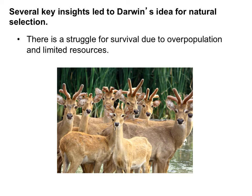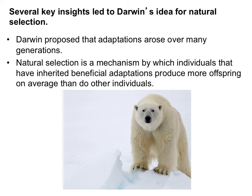Another one of Darwin's observations was that there's a struggle to survive due to overpopulation and limited resources — meaning not everyone is going to survive, which is why you hear about survival of the fittest. Darwin proposed that adaptations arose over many generations. They don't just show up when they're convenient; they have to already be in a population and will show up more and more over subsequent generations.